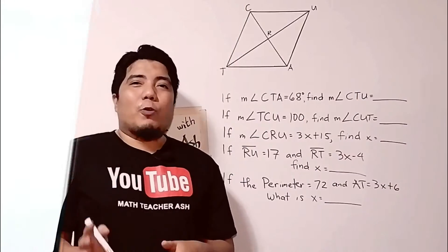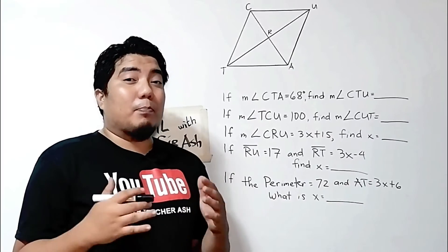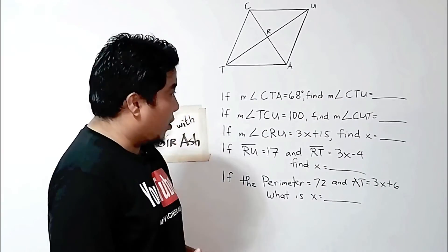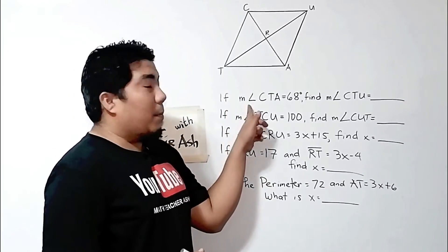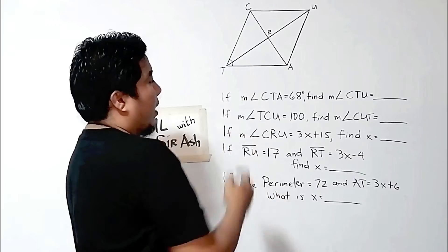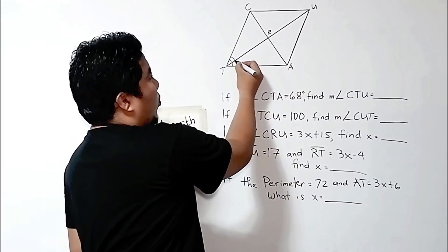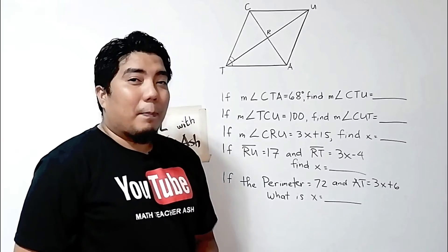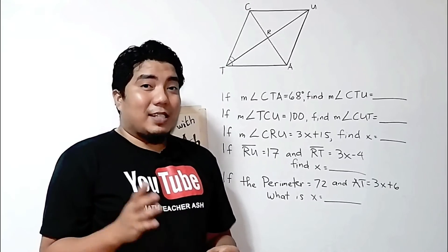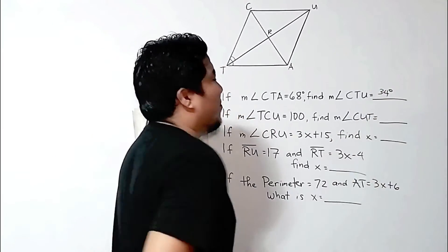We are now at our second figure. We have rhombus C-U-A-T, in which the diagonals intersect at point R. The first problem: if the measurement of angle CTA is 68 degrees, what is the measurement of angle CTU? Applying the property that the diagonal of a rhombus divides the opposite angles into two, half of 68 is 34 degrees.